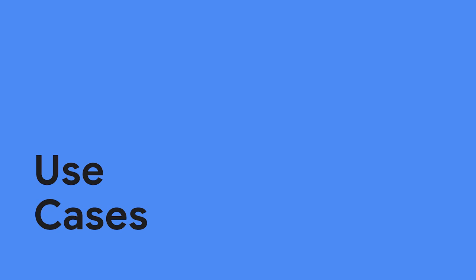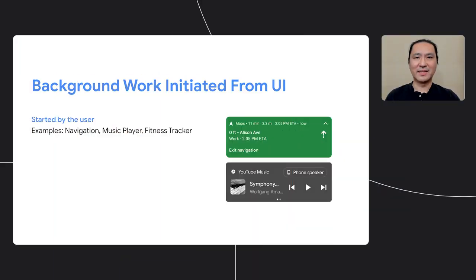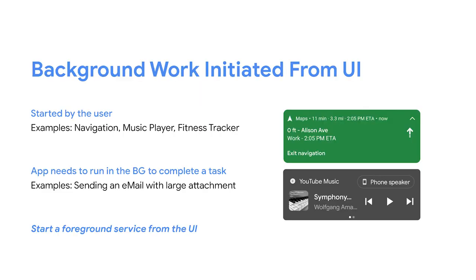Let's take a look at a few app use cases and talk about what API is best used for them. For a foreground service that the user starts from the UI, a foreground service is still the right thing to use. For example, navigation, music players, and fitness trackers should still use a foreground service in order to continue the process in the background. When an email app needs to send a large attachment, starting a foreground service from the UI is also the right way. This way, the attachment can be uploaded and the email is sent in the background right away, and the user can move on to doing other things in the meantime.